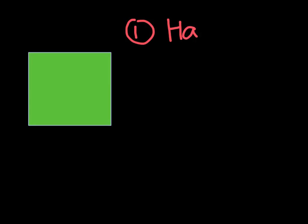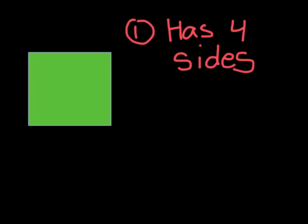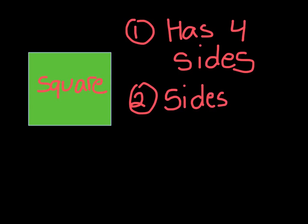The first shape we're going to look at today is going to be a square — a green square. So the square has a few rules. The first rule is that the square has four sides.